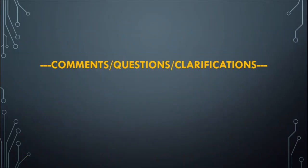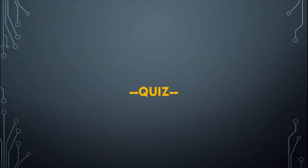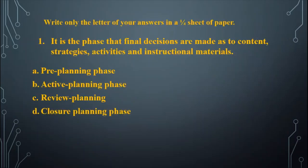Okay, so it's time for some comments, questions, and clarifications. Since there are no more questions and clarifications, we'll start with our quiz. Arrange your chairs and prepare one sheet of paper. Don't forget to write your name and the date. Are you ready? Number one. The instruction is to write only the letter of your answer. First question: It is the phase where finalizations are made as to content, strategies, activities, and instructional materials. A, pre-planning phase. B, active planning phase. C, review planning. Or D, closure planning.